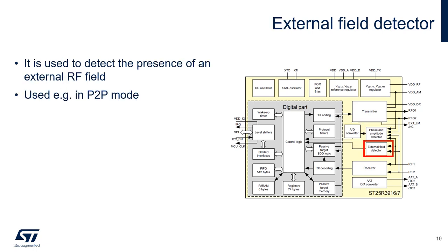The external field detector is used to determine if an external RF field is present at the antenna. This can be used as a wake-up mechanism when in peer-to-peer mode.